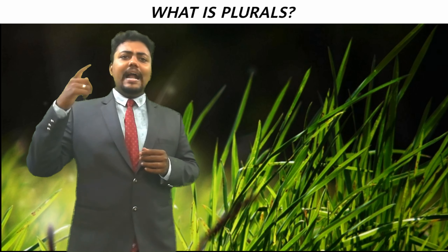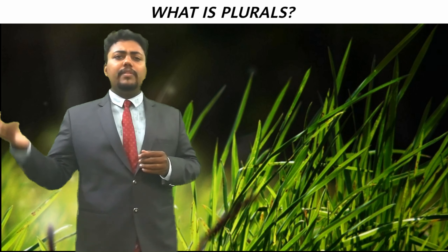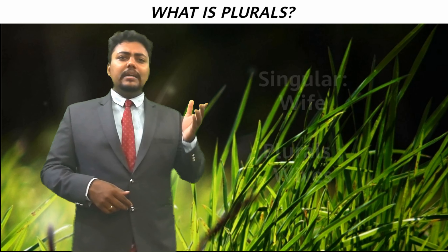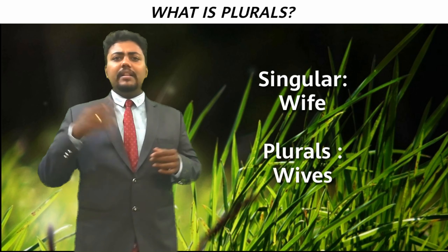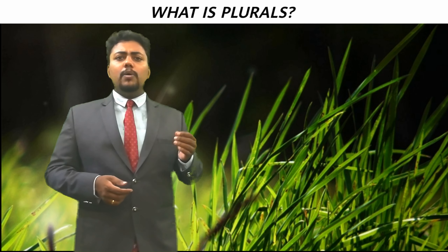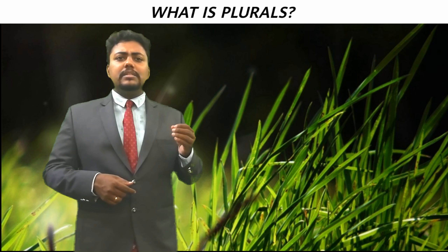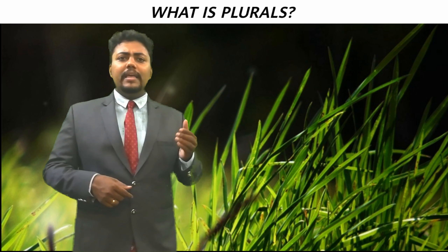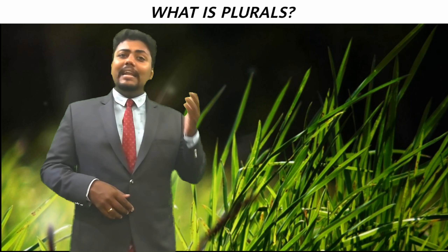Some words ending with 'ife' replace the f with a v and add 's': the singular is wife and the plural is wives. For common nouns ending with a consonant followed by 'y', replace the y with an i and add 'es': nappy becomes nappies.